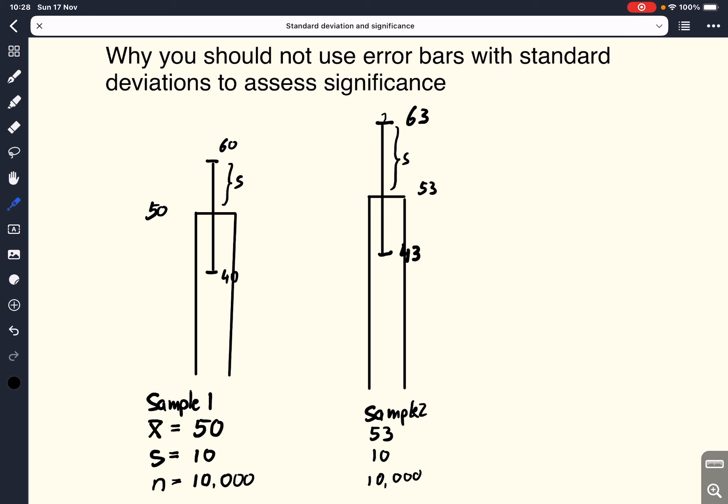And intuitively we would say, okay, the error bars, there is a huge overlap between these error bars here. So our intuition tells us that the samples are not significantly different from each other. So we say both sample means are probably from the same population. Now, that is our intuition. But is this intuition actually true?